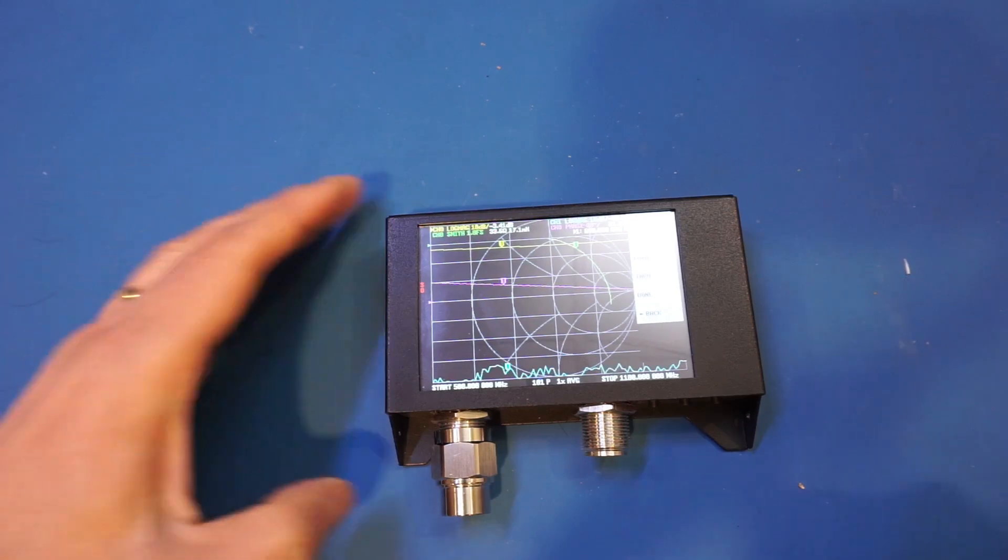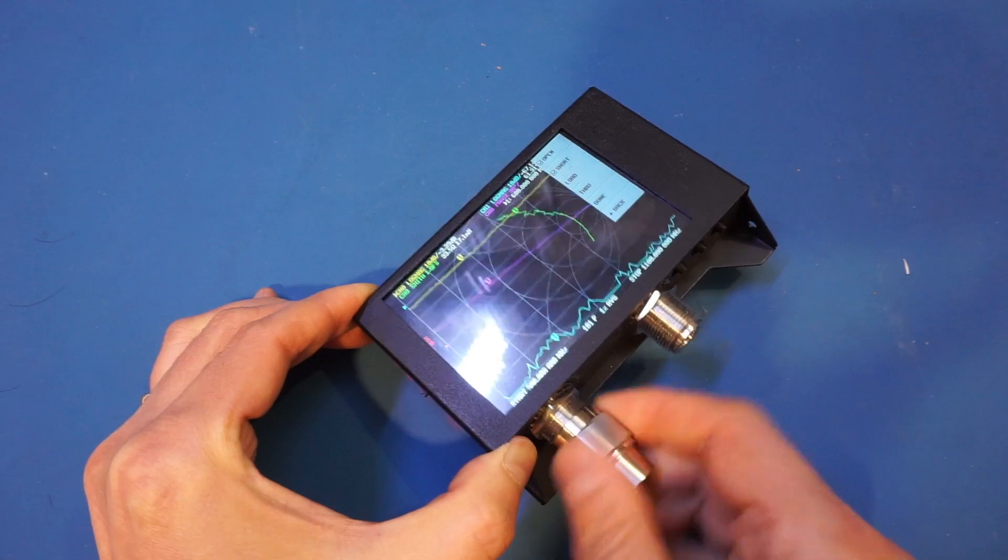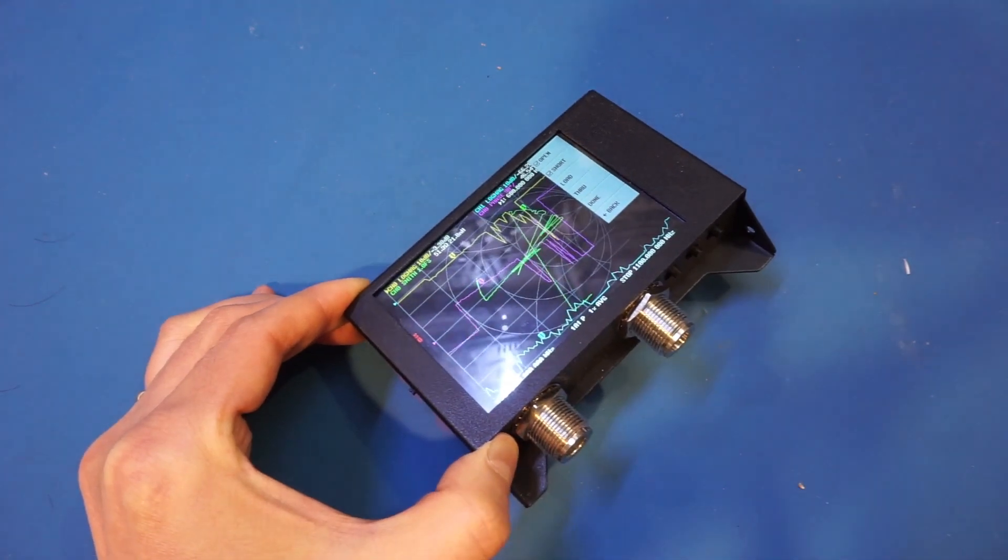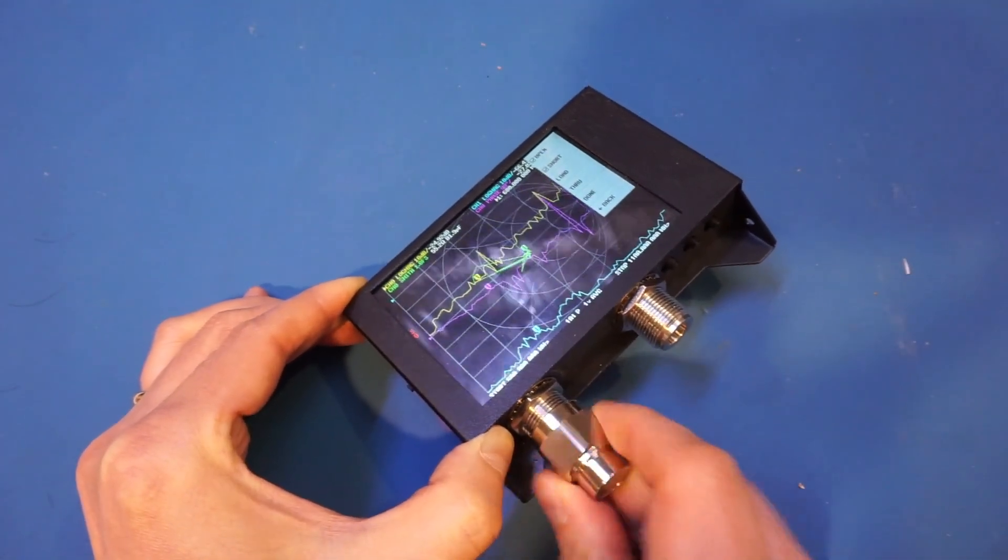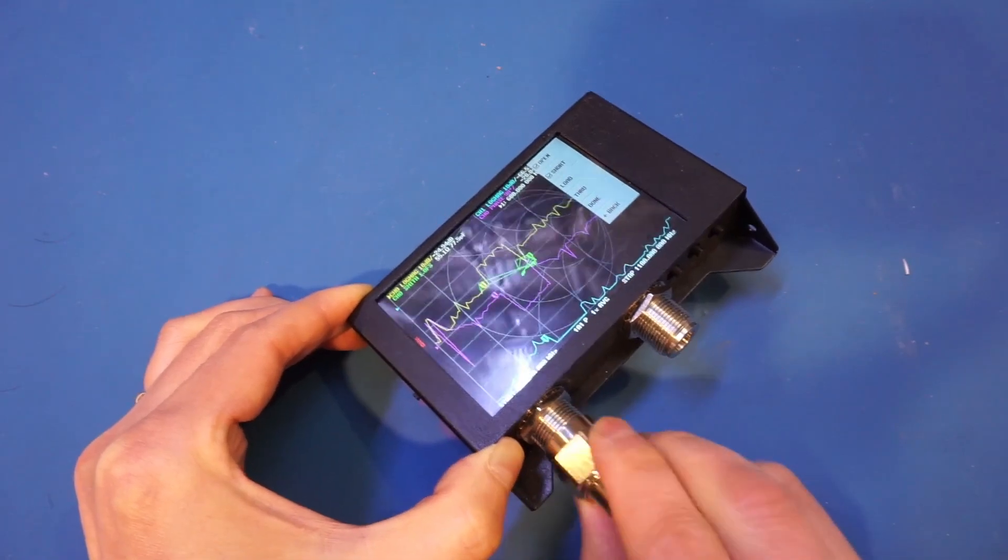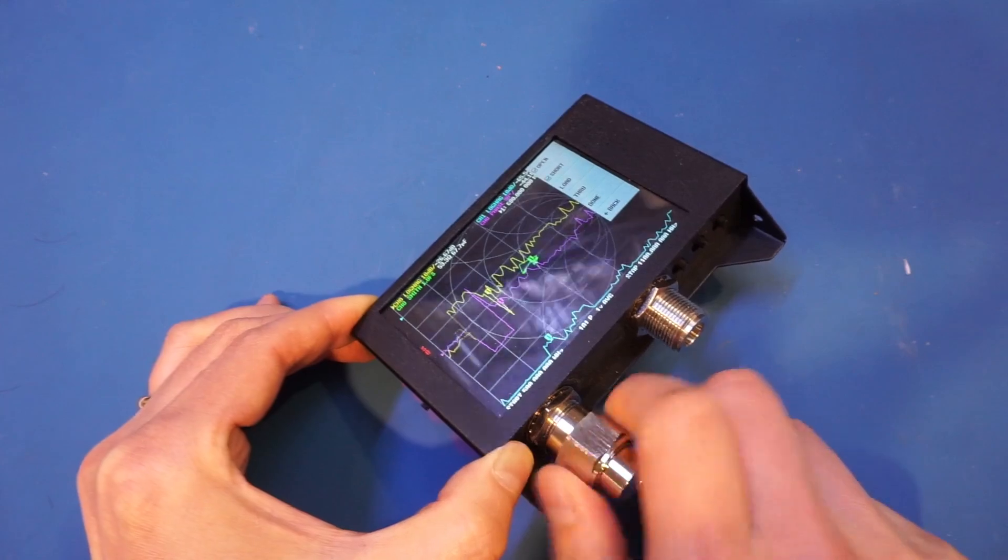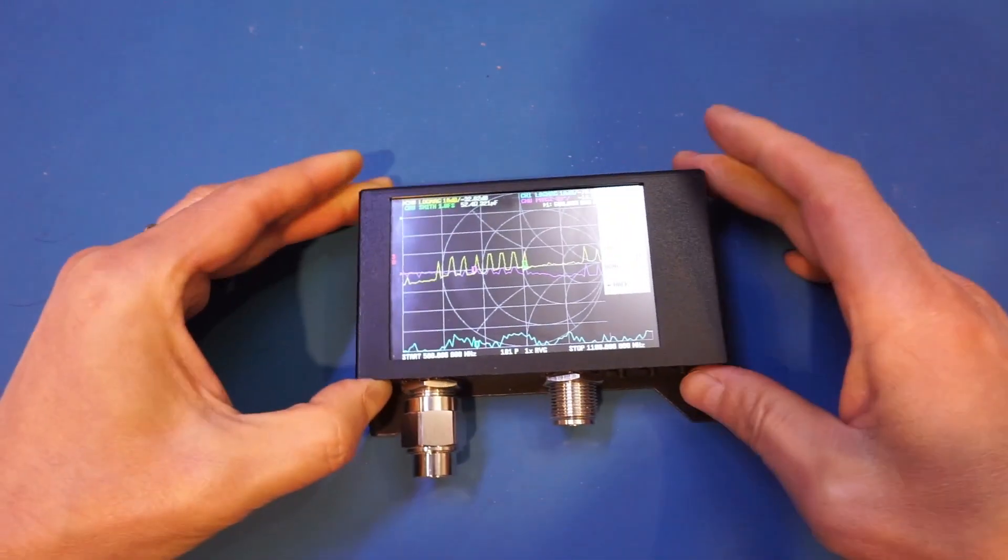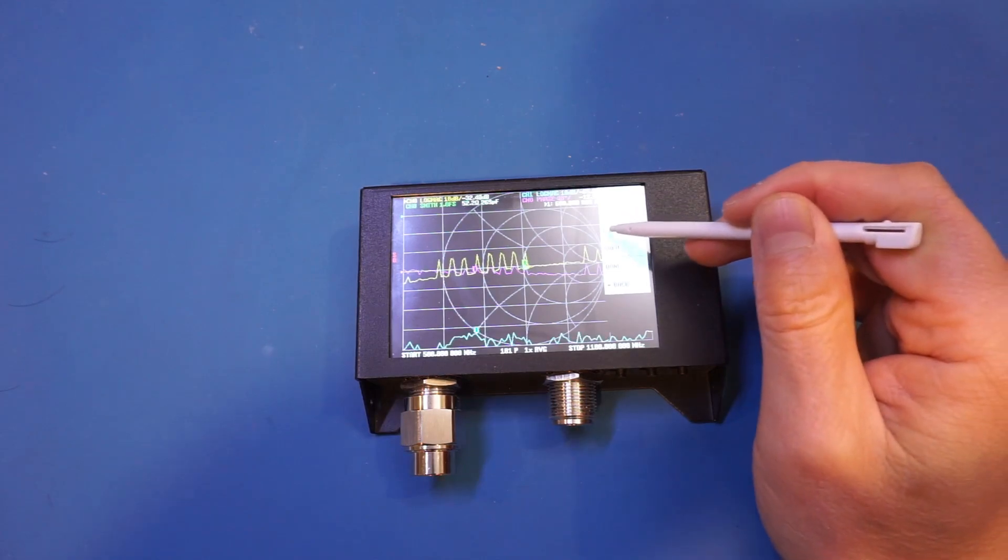The short calibration is done. Let me now move on to the load. I'll put on a 50 ohm connector here. So this is the 50 ohm load. Sometimes it's a little bit tricky to put the connector on properly. This is the load connector. We will do load calibration.